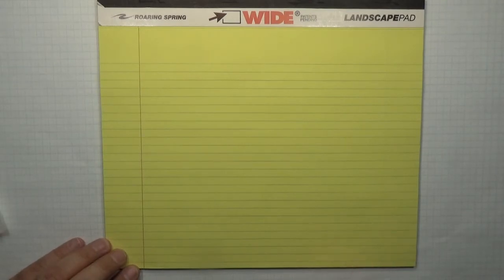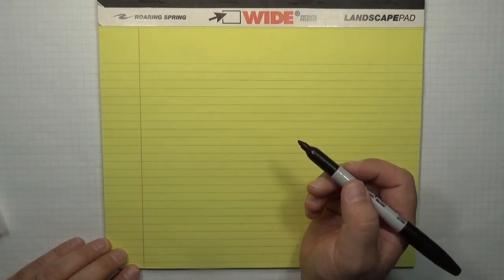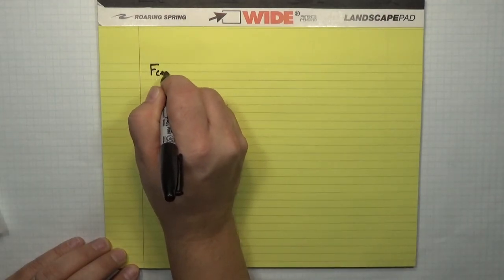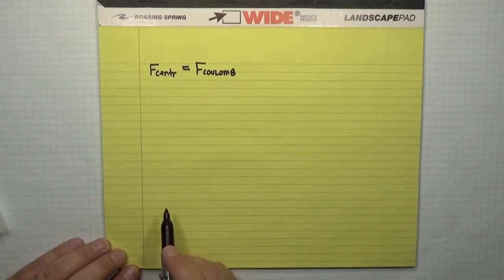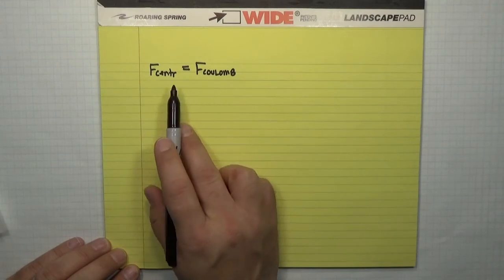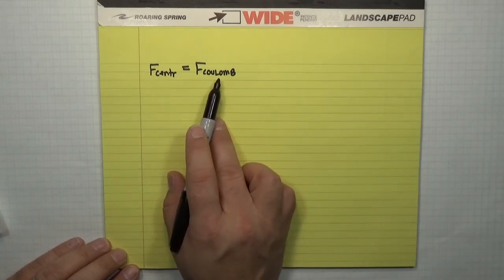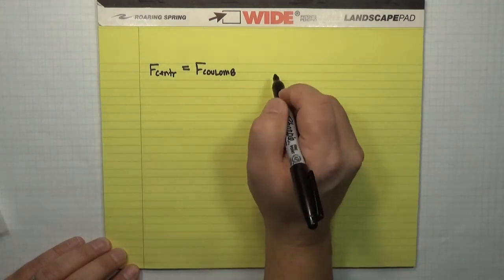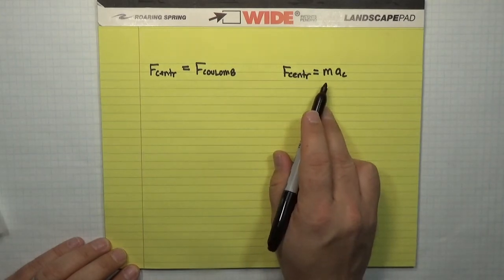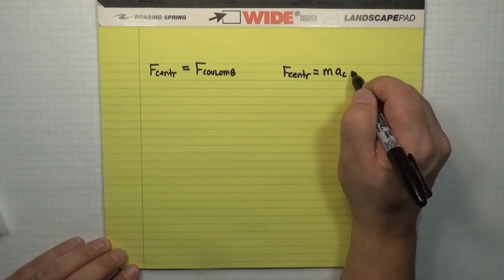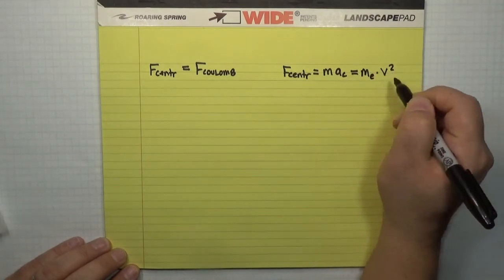The key thing we need to remember from last term is that the centripetal force is the inward-pointing force in the orbit. So in this case, the centripetal force equals the Coulomb force. What makes this problem possible is that we have an expression for the Coulomb force, and a very general expression for the centripetal force that relates the motion of the orbit to its strength. The centripetal force is given by the centripetal acceleration times the mass — in this problem, the mass of the electron. The centripetal acceleration is v squared divided by the radius of the orbit.